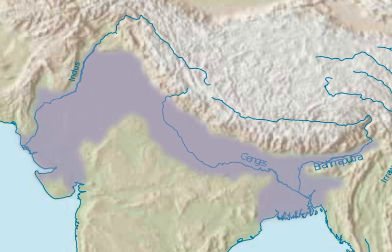The plain is bound on the north by the Himalayas, which feed its numerous rivers and are the source of the fertile alluvium deposited across the region by the two river systems. The southern edge of the plain is marked by the Chota Nagpur Plateau. On the west rises the Iranian Plateau.